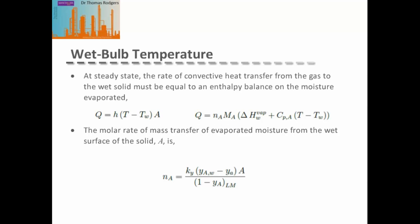At steady state, the rate of convective heat transfer from the gas to the wet solid must equal the enthalpy balance on the moisture being evaporated. The convective heat transfer is given by the heat transfer coefficient h, multiplied by the temperature difference between the convective gas and the wet bulb temperature (the surface temperature of the moisture), multiplied by the area available for heat transfer.